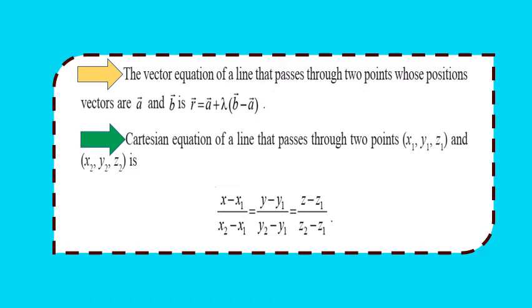Next, the vector equation of a line that passes through two points whose position vectors are a and b: the equation is r = a + λ(b − a), where λ is some constant. In Cartesian form, if we have two points with coordinates (x₁, y₁, z₁) and (x₂, y₂, z₂), then the equation is (x − x₁)/(x₂ − x₁) = (y − y₁)/(y₂ − y₁) = (z − z₁)/(z₂ − z₁). Pause and note down these equations.